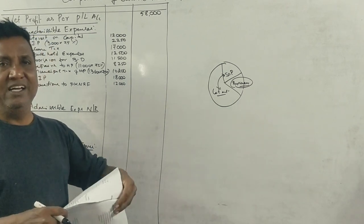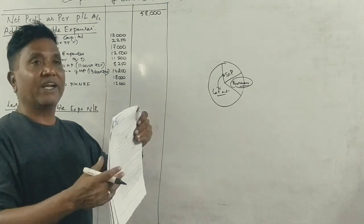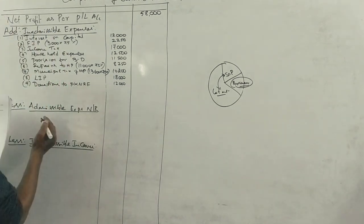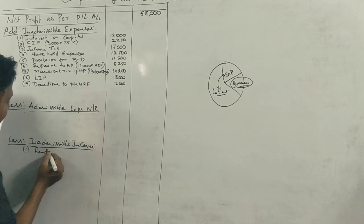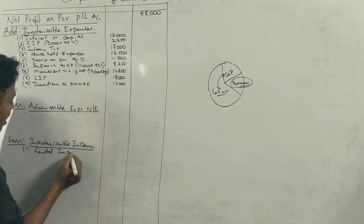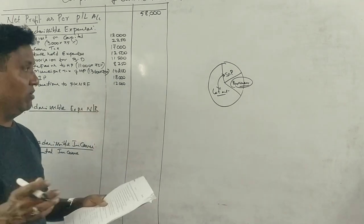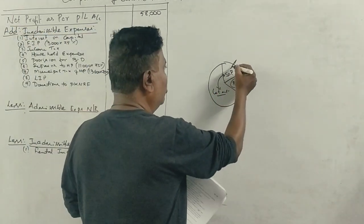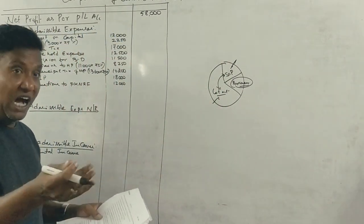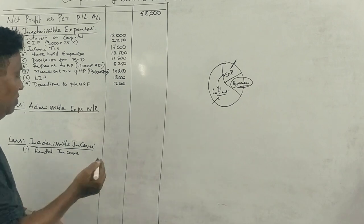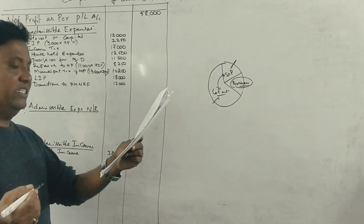On the credit side, we identify inadmissible income. First, rental income is under the head 'income from house property.' If rental income is Rs. 50,000, it is not fully inadmissible income — it is treated under a separate head. So it is excluded from business income.